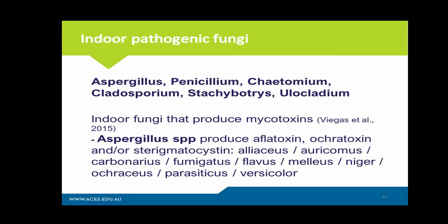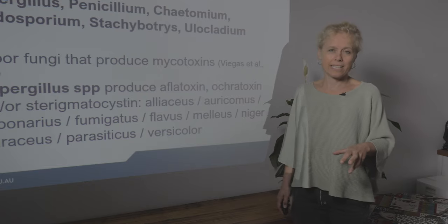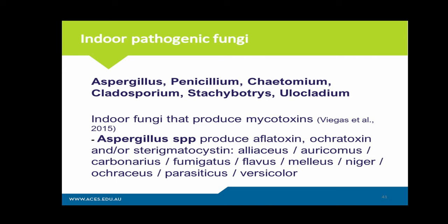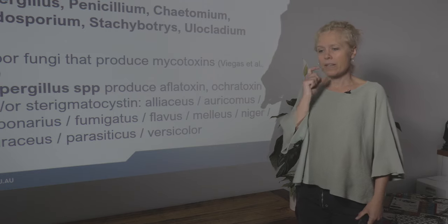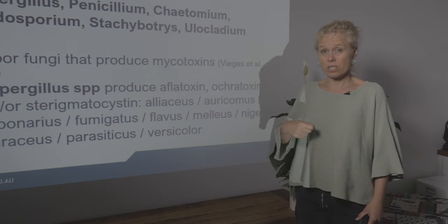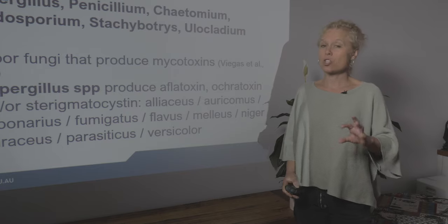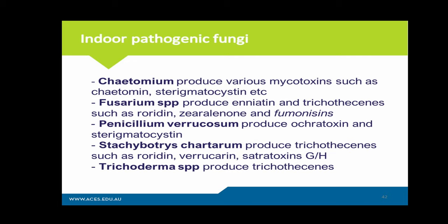Indoor fungi that produce mycotoxins include Aspergillus species producing Aflatoxins, Ochratoxins, and Sterigmatocystin. The specific Aspergillus species include A. aliaceus, A. carbonarius, and A. fumigatus — with extensive data on A. fumigatus causing pneumonia in immunocompromised patients, especially in hospitals. The only way to identify mycotoxin producers in your testing is to do viable sampling, using a different cassette that gets sent to the lab, placed onto culture to enable that fungi to grow.